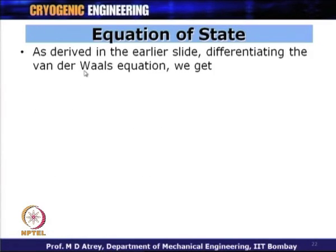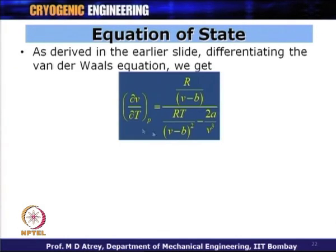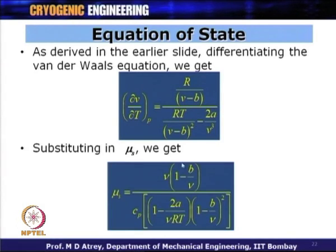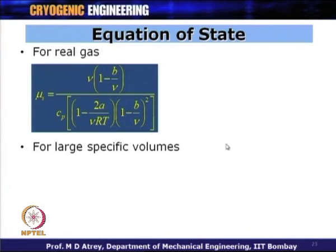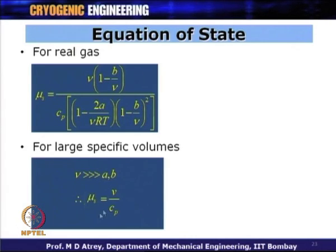For real gas, the volumetric coefficient del V/del T is always positive, hence the isentropic expansion coefficient is always positive. Isentropic expansion results in cooling irrespective of its initial state, unlike JT expansion. We found that whether ideal or real gas, mu_S is always positive — meaning isentropic expansion always results in lowering of temperature.